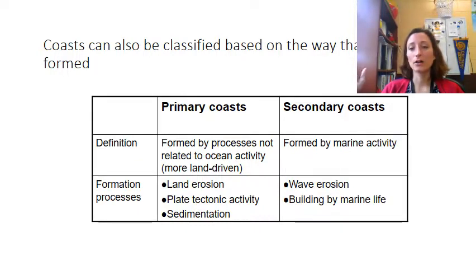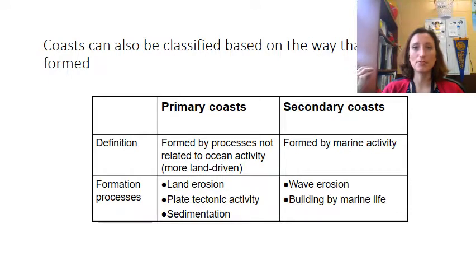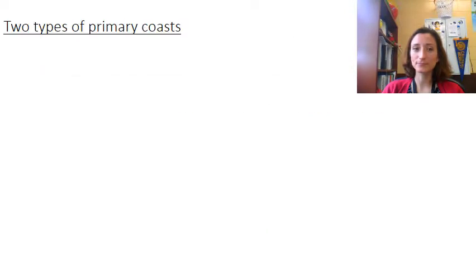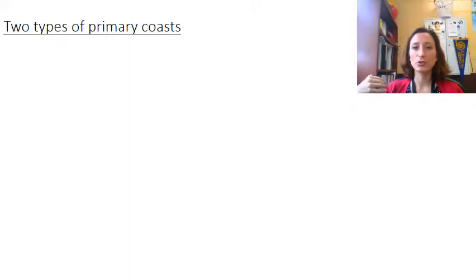Secondary coasts are known as marine coasts, and they're formed by some kind of activity related to the ocean — whether it be tides, the effect of waves, or even potentially by the marine organisms themselves. There are multiple types of primary and secondary coasts; I'm just giving you a couple of examples chosen to fit the time we have here.